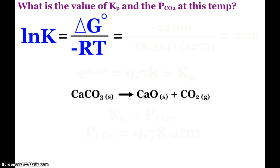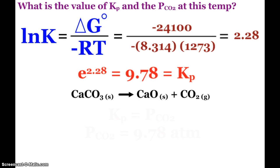And so we can calculate K. So we have our negative 24,100 joules. And then we see our temperature, 1273 Kelvin. Take the E of that, and we get 9.78 is our K. How do I know it's Kp? Well, solid, solid. The only thing in my equilibrium expression is the pressure of carbon dioxide.